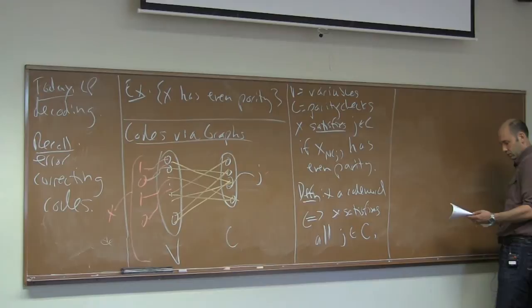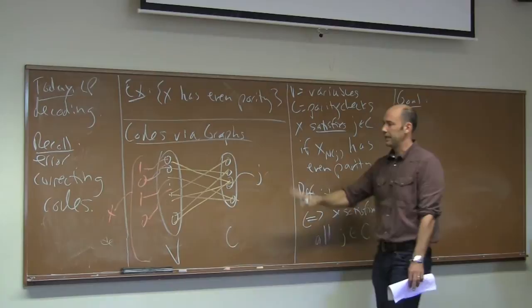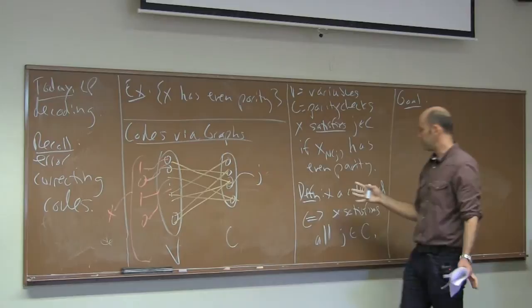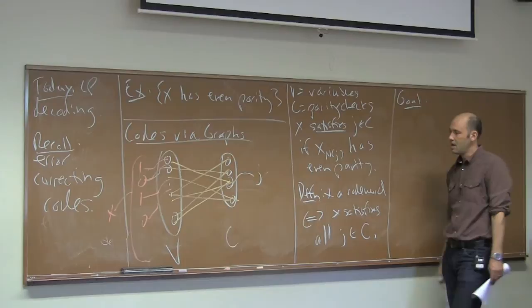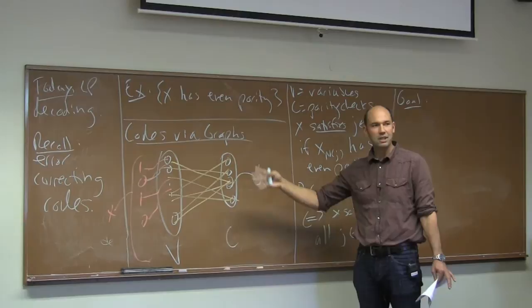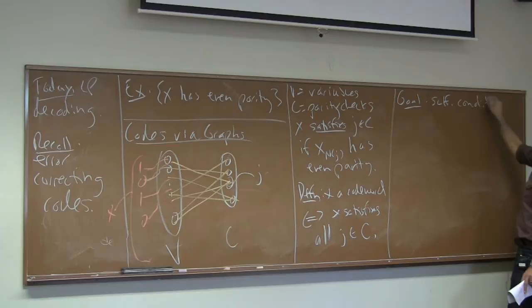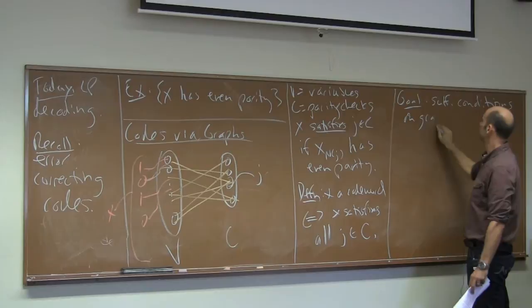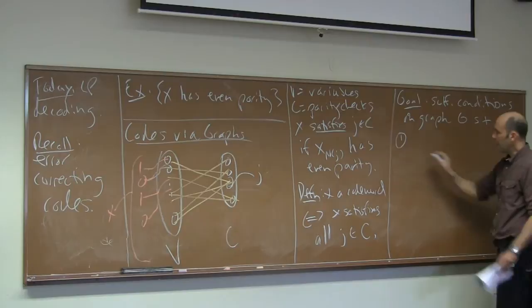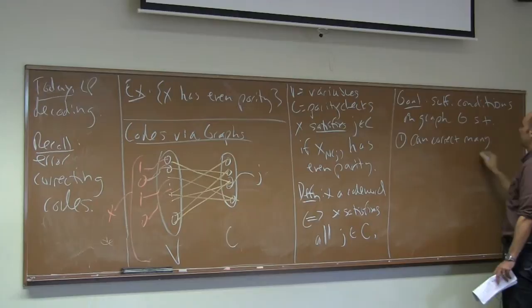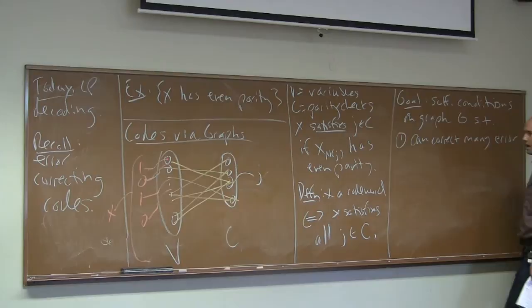The focus of these lectures is on sufficient conditions on the graph G so that, first, we can correct many errors — meaning the minimum distance between any two code words is big, say at least a constant fraction of n, like 1% of n. Even if 1 out of 20 bits are flipped, for a very long message, you're still closer to the original code word than any other code word.